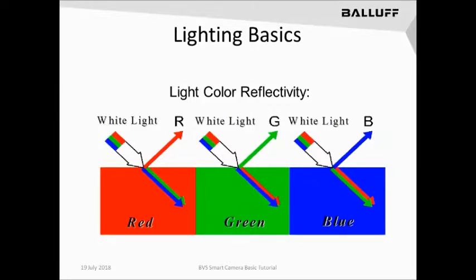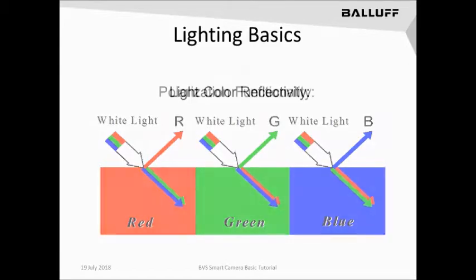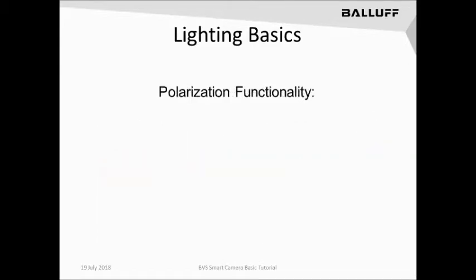Moving to the blue object, the blue component is also reflected back best to the imager in the camera, thus creating greater contrast. This shows that by manipulating the color of the light source against the color of an object, we can take advantage of contrasting that part to see specific areas we wish to see. A specialized technique that can be used to help cut down on stray reflectivity in an image off of an object or a part is known as polarization.